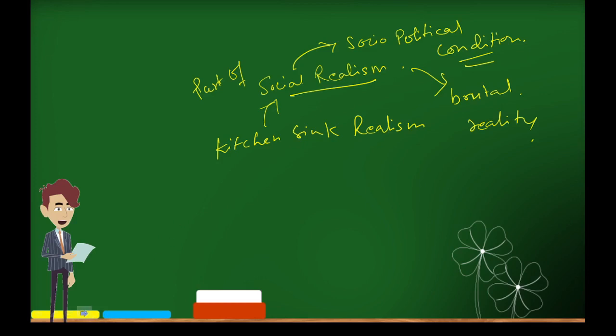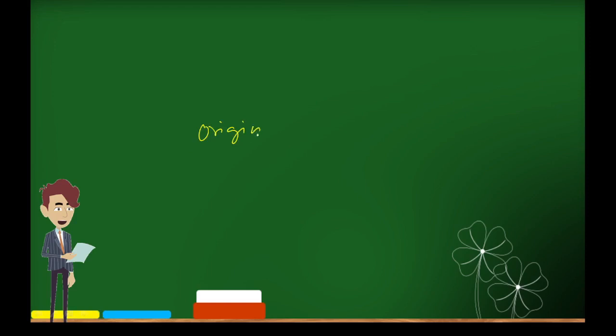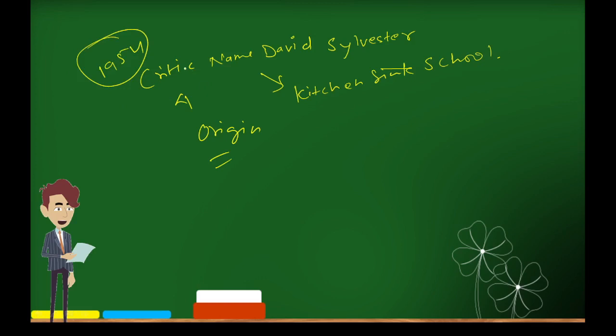Now let's talk about its origin. Origin of Kitchen Sink Realism: it was a critic named David Sylvester who used the term Kitchen Sink School. He used this term Kitchen Sink School in 1954.